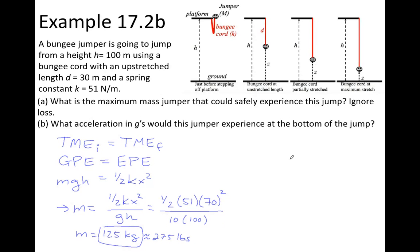Now, part B wants to know what's the acceleration expressed in Gs that the jumper would experience at the bottom of the jump. Well, at the bottom of the jump, the bungee cord is pulling up, and we can model that as a spring force, and then the bungee jumper's weight would be pulling down. We can find the acceleration by finding the net force and dividing it by mass. The net force will be the spring force minus the weight. The spring force will be given by K times X, and the weight will be given by M times G.